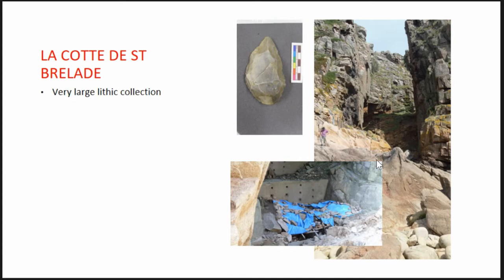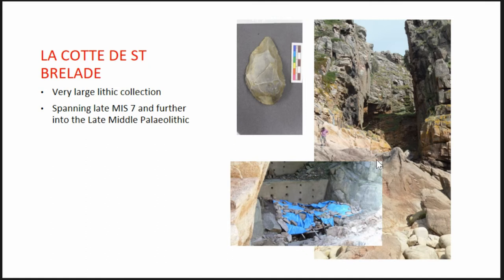Overall it's a very large lithic collection — even within a North European context it's large, with approximately 250,000 artefacts from just the excavated area spanning MIS 7. It does extend into MIS 3 as well, so there are later occupation periods. It's mostly a continuous reuse of the site over very short periods — it never seems to have been densely occupied, probably associated with some kind of retooling behaviour seen throughout the Neanderthal occupation of this region.